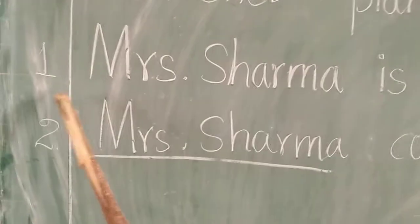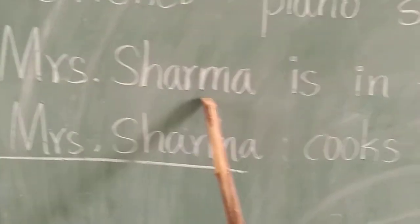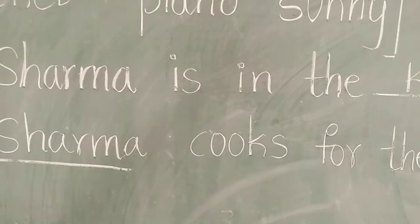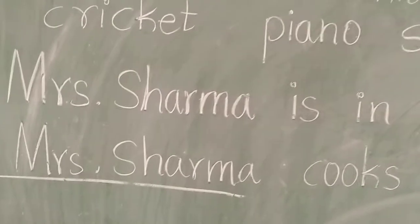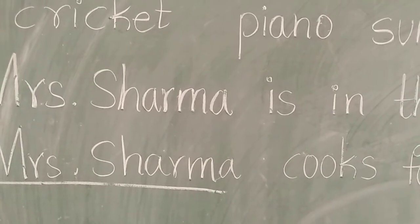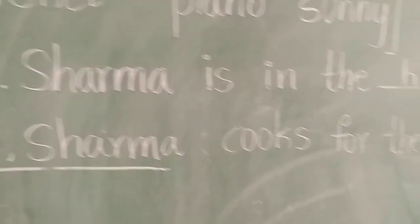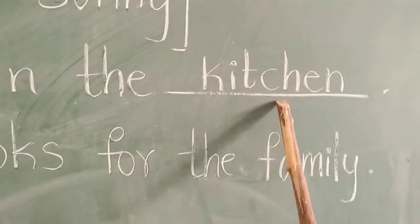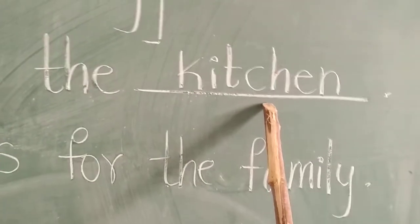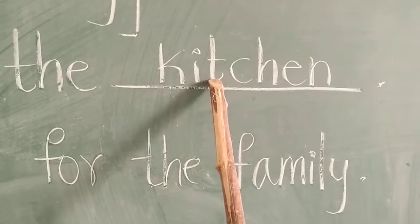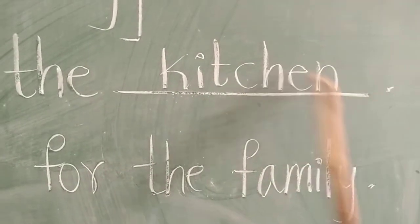First one: Mrs. Sharma is in the dash. Where is Mrs. Sharma? In the picture you can see — she is in the kitchen. Spelling of kitchen: K-I-T-C-H-E-N, Kitchen.